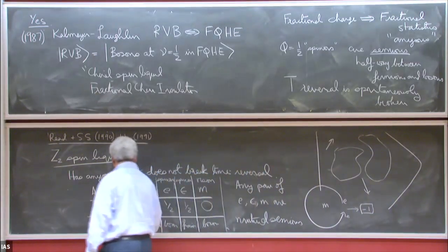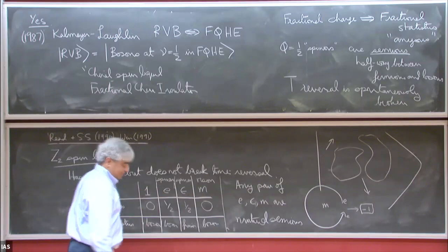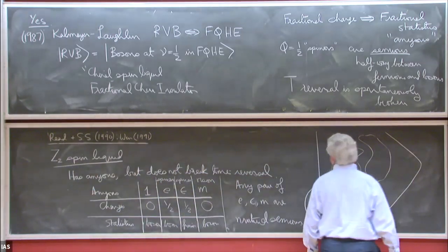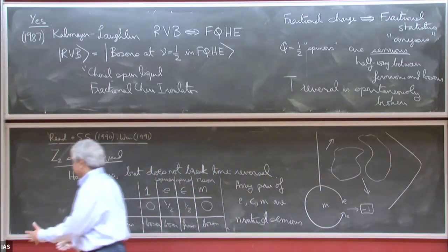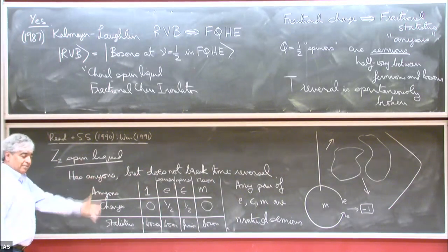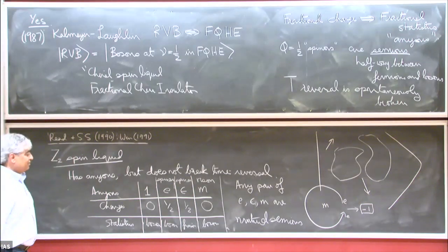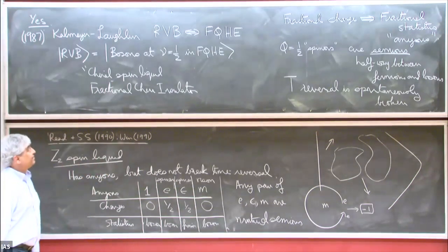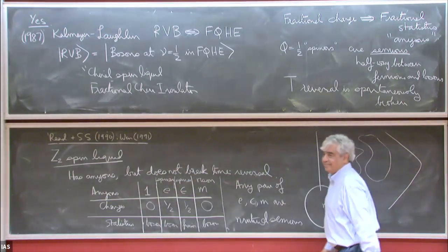There were parallel developments around the same time in the field theory of the fractional quantum Hall effect, Chern-Simons gauge theories, especially here at the IAS, and how they all connect is now beautifully understood. It was curious how all this happened in the late 80s and early 90s — I was very lucky to be part of these remarkable developments.